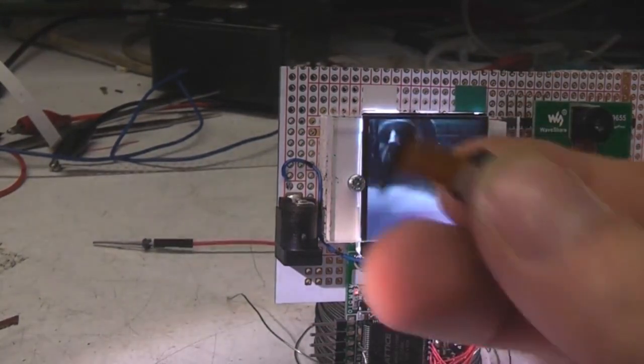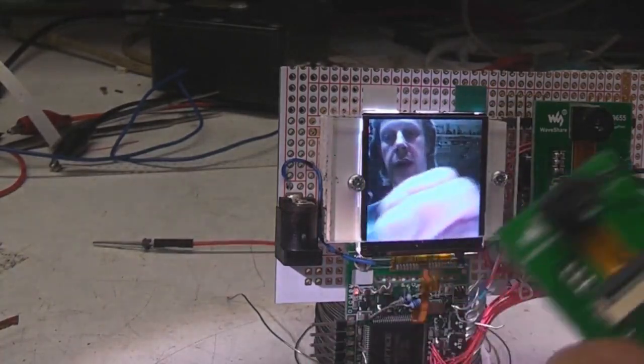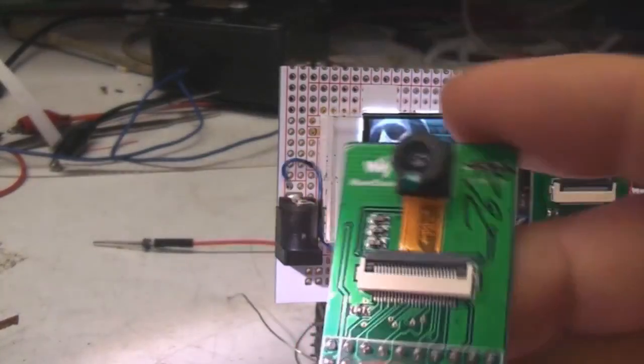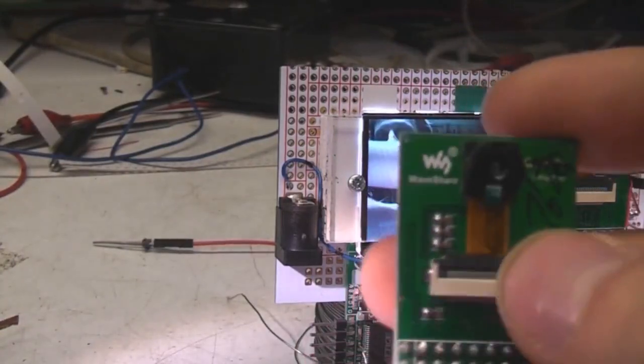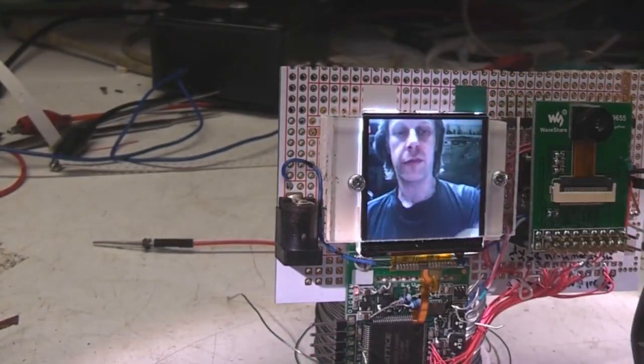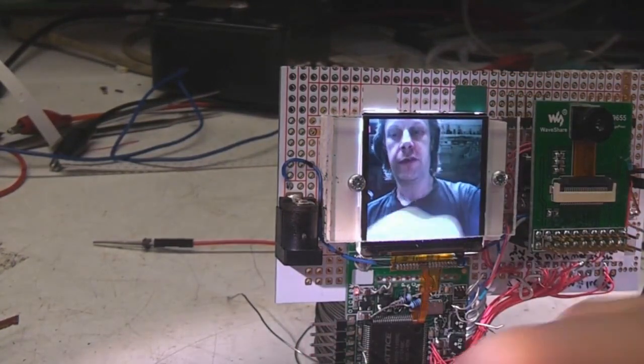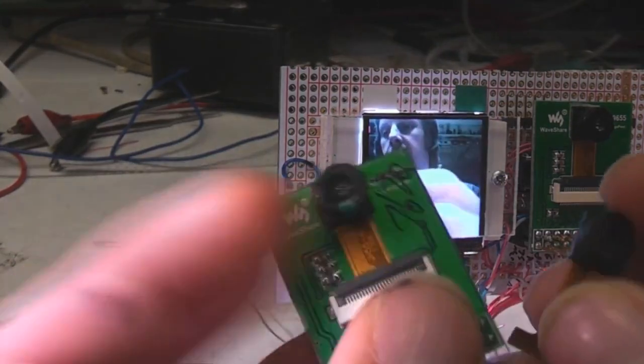There's a few other variants. There's just the bare modules themselves. There's also a company called WaveShare that sells these breakout boards. This is actually for a slightly different version of the module. For the 9655 there's actually two versions of the module out there.